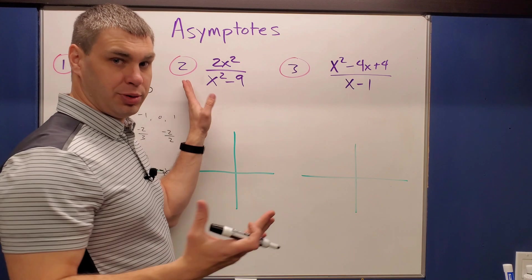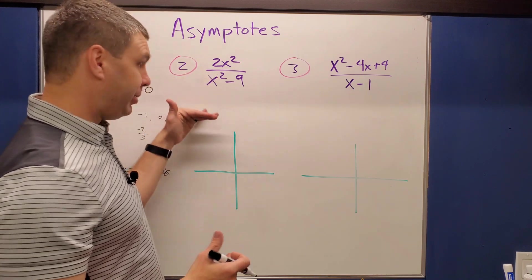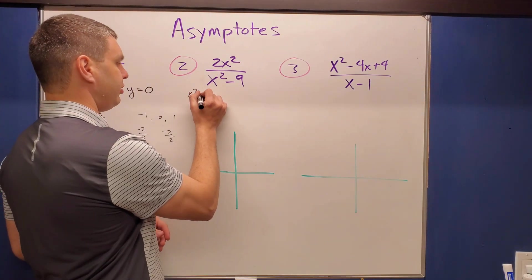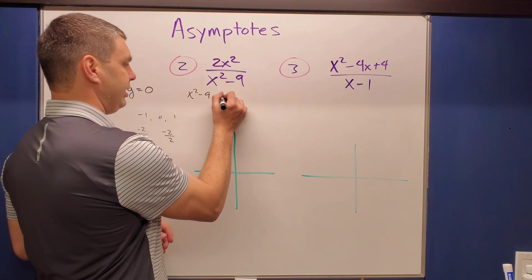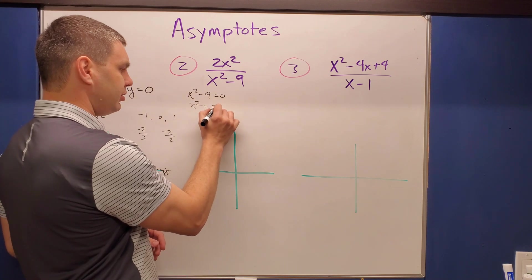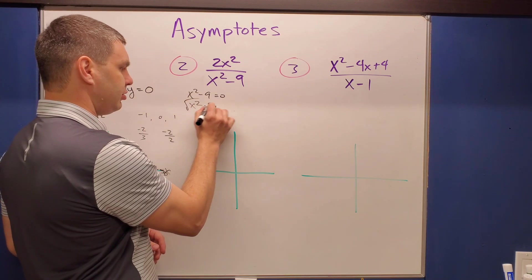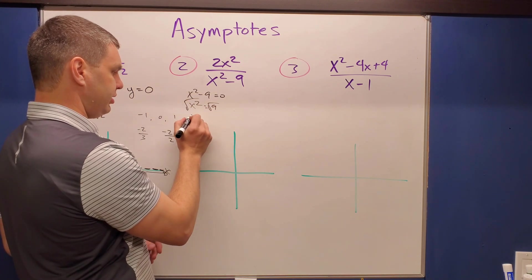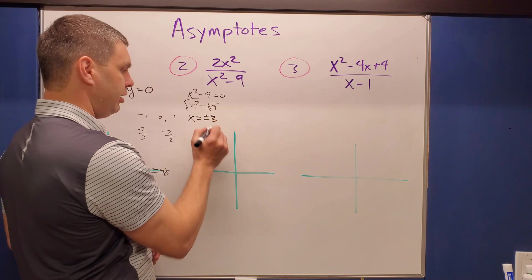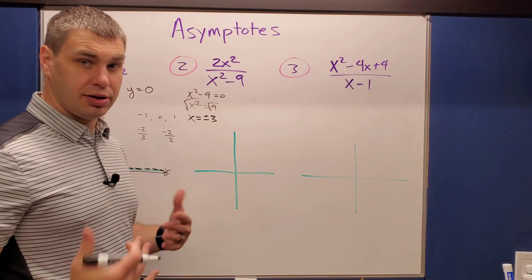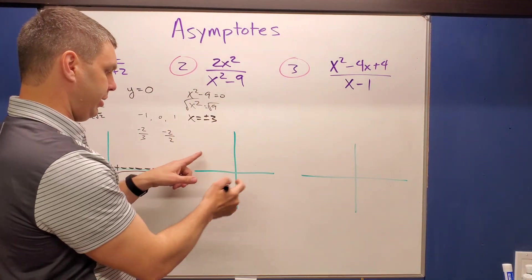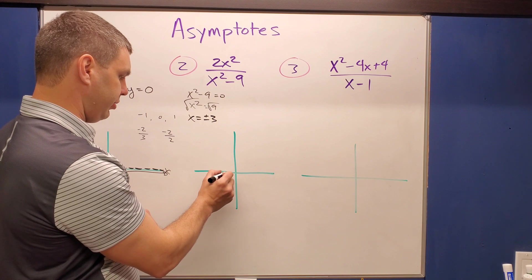Number two: setting the denominator x² minus nine equal to zero gives x² equals nine. The square root of nine is plus or minus three. So we have vertical asymptotes at x equals positive three and x equals negative three, drawn as vertical dotted lines on the graph.